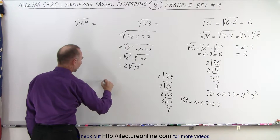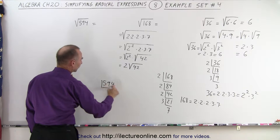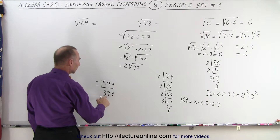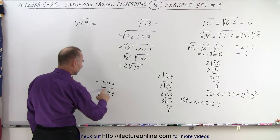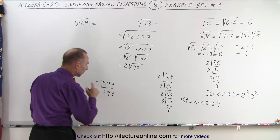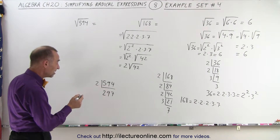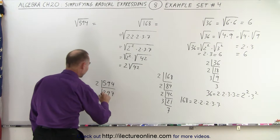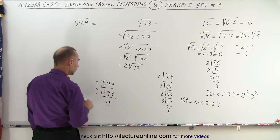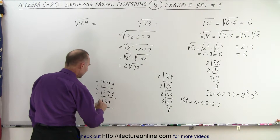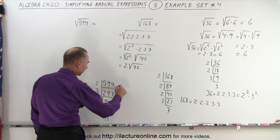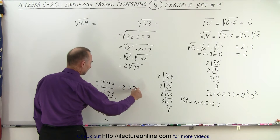We can do the same for the number 594. Since it's even, it's divisible by 2, giving 297. Now it's no longer divisible by 2, but it is divisible by 3, so dividing by 3 gives 99. 99 divided by 3 gives 33, and 33 divided by 3 gives 11. So 594 can be written as 2 times 3 times 3 times 3 times 3 times 11.